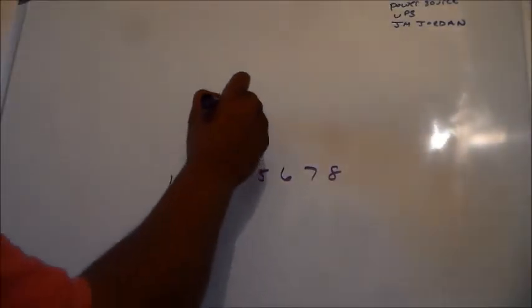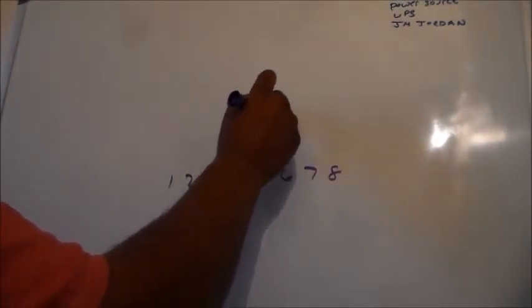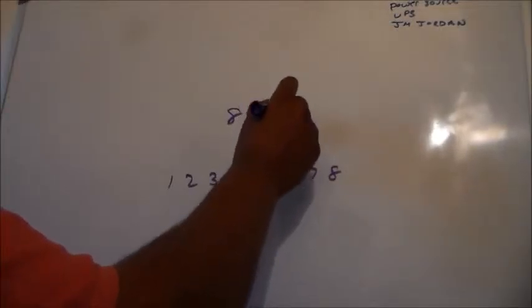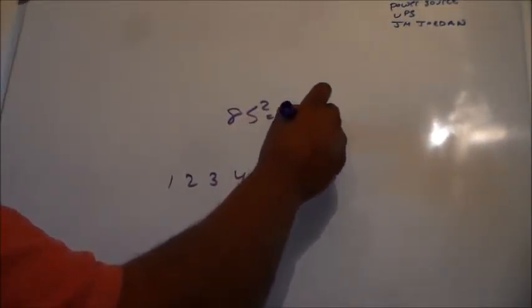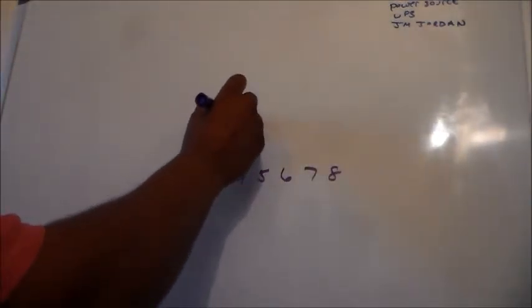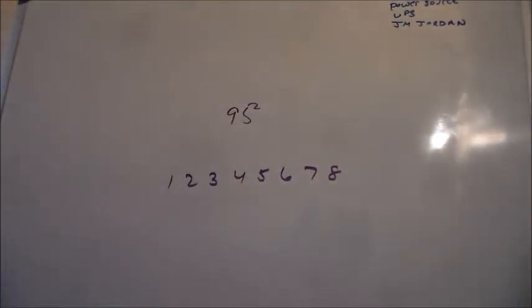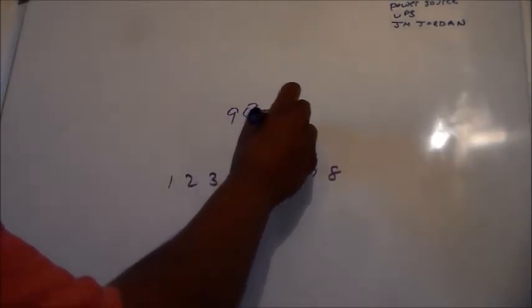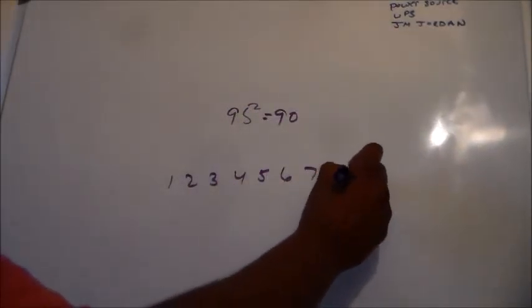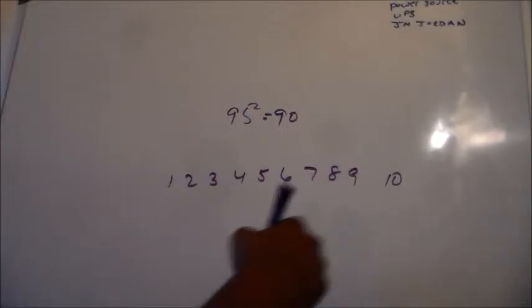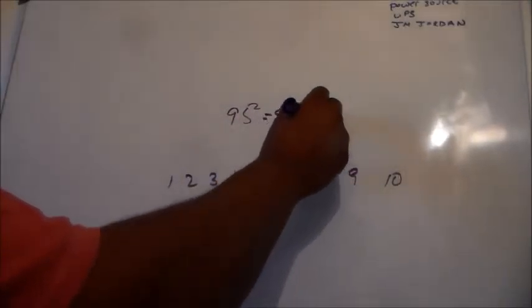So, after you get really good, you can start doing them in your head. 85 squared equals 7,225. Then 95 squared equals 90, because 9, next number is 10, 9 times 10 is 90, 9,025.